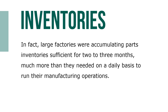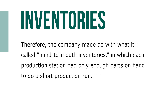Large factories were accumulating parts inventories sufficient for two or three months, more than they needed on a daily basis to run their manufacturing operations. A solution to this problem was found in 1905 when the Oldsmobile Motor Works in Detroit burned down. Management rented a new production facility to get production up and running as quickly as possible after the fire. Because the new facility was much smaller, there was no room to store large stockpiles of inventory. Therefore, the company made do with what it called hand-to-mouth inventories, in which each production station only had enough parts on hand to do a short production run. Because all of its parts suppliers were close by, Oldsmobile could place orders in the morning and receive them in the afternoon, even without telephones, just as with today's computerized just-in-time inventory systems.